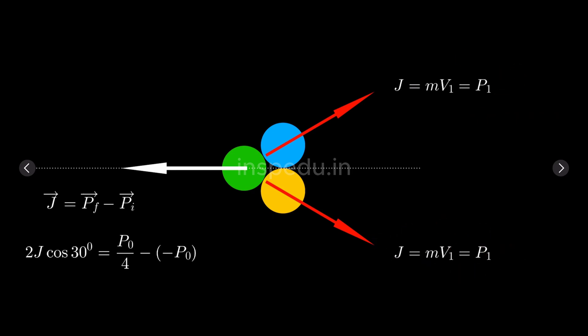Symmetrically we are writing. Similarly here, incident velocity is, incident momentum is mv₀, and outgoing momentum is mv₀ by 4. So P final minus P initial if we apply, and I'm taking this direction as positive, so plus 2J cos 30, P final is also plus, minus of minus P₀. So when we simplify these equations, we can solve for v₁ and v₀.